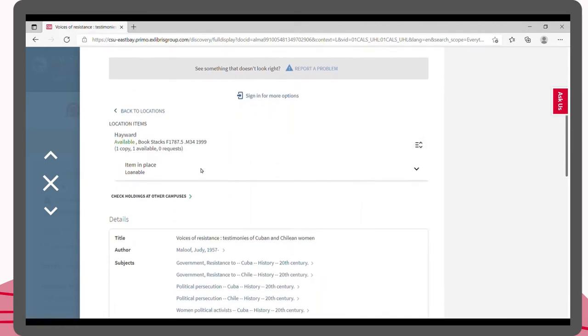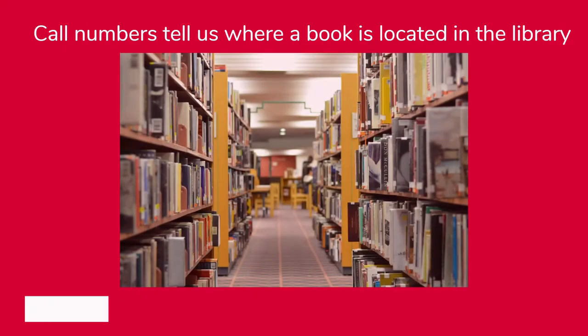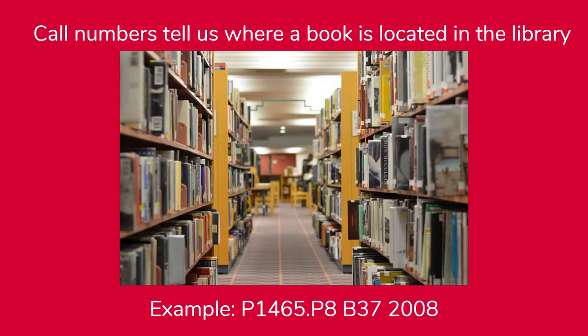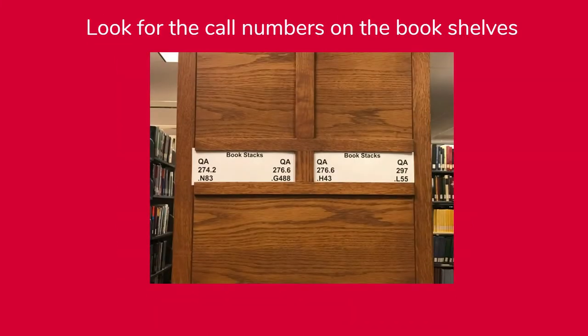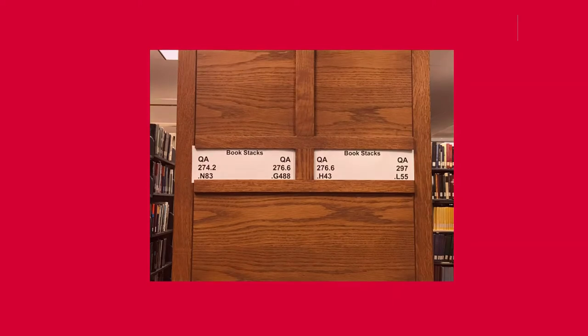If you would like the physical copy, you can find the location of the book under location items. If the book is located in the book stacks or reference, you can locate it by using the call number listed. You can think of the call number as the address that helps you locate the book in the library stacks. The books are organized by these numbers, so you can look for the corresponding letters and numbers on the shelves to find the book's location.